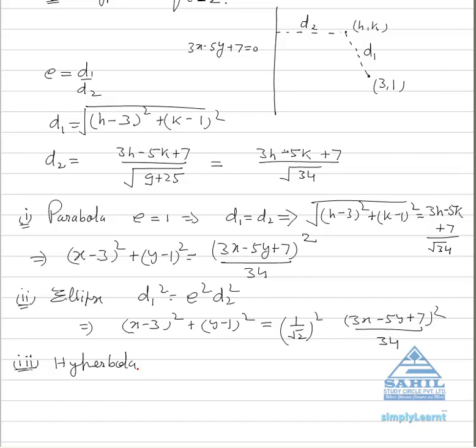But right now these are the cases in which the center is not the origin. So in this case it will be (x minus 3) whole square plus (y minus 1) whole square equals 4 into (3x minus 5y plus 7) whole square upon 34.